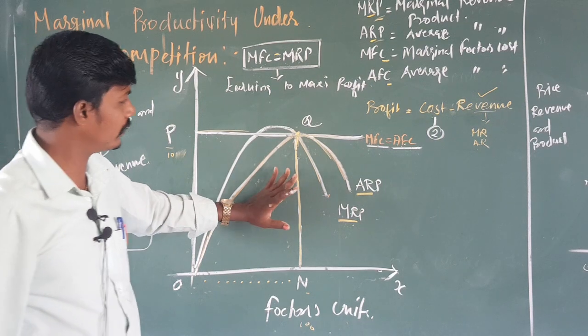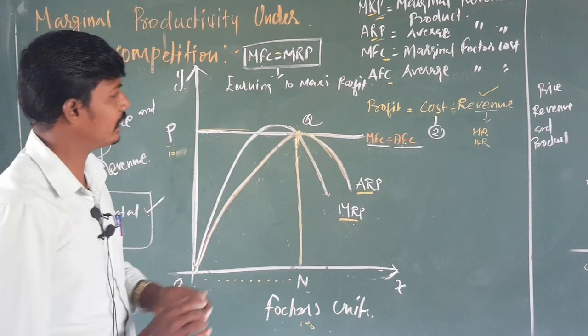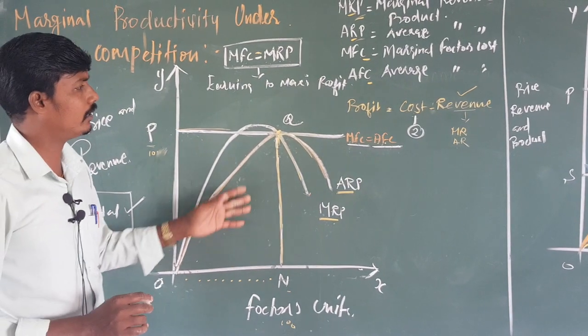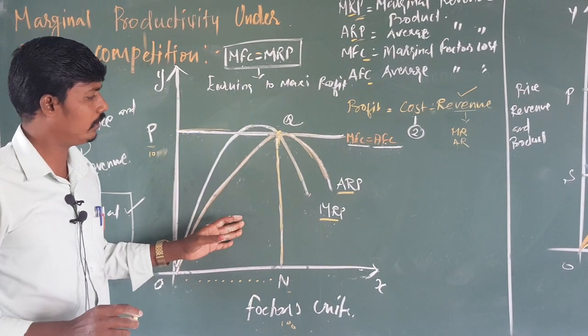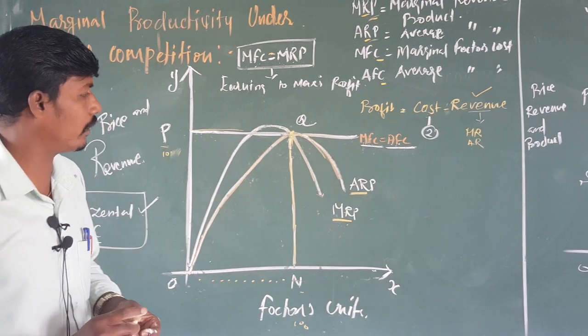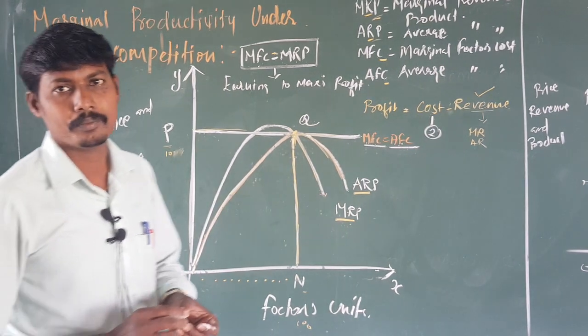That completes the four-step diagram for perfect competition. Next, we will cover the diagram under imperfect competition in the next video. Thank you.